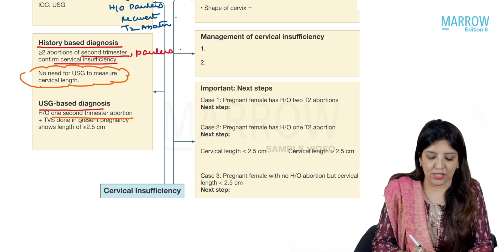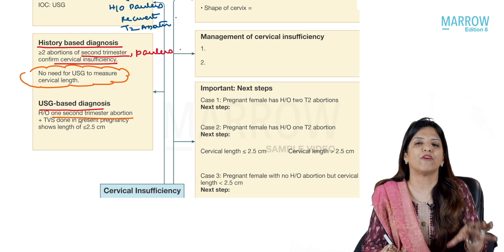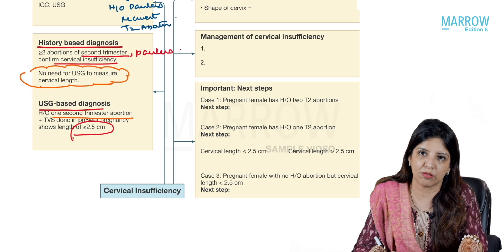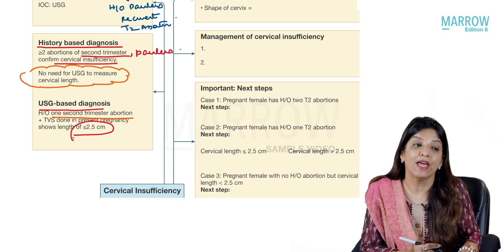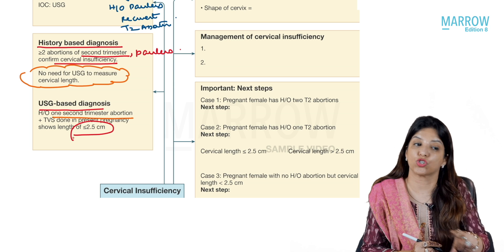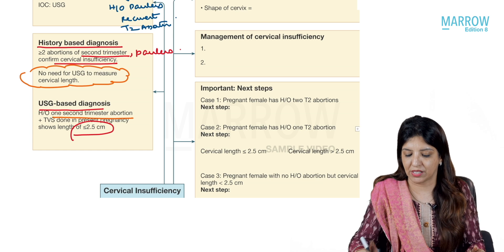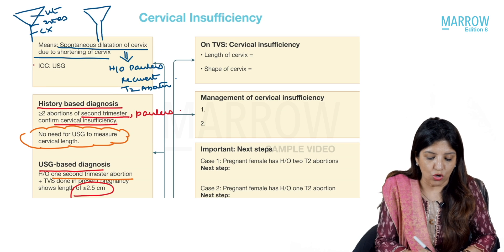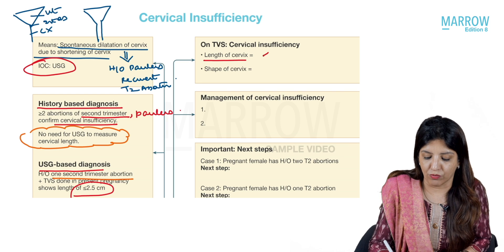If the patient reports only one second trimester painless abortion, you will need to do a TVS. On TVS, if the length of the cervix is less than or equal to 2.5 centimeters, it is called cervical insufficiency or cervical incompetence. The investigation of choice for cervical incompetence is TVS. In a normal pregnant female, the length of the cervix is 4 centimeters.